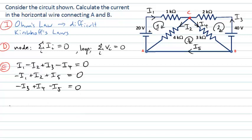Now let's think about the loops and the relationships between currents. One useful thing: if I write resistances in kilohms and consider currents in milliamps, then every time I compute current times resistance, the result is in volts — because the 10⁻³ from milliamps and the 10³ from kilohms cancel. This means I can work consistently in volts for potential drops. At the end I just remember that my currents are in milliamps, not amps.